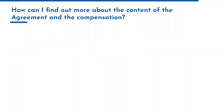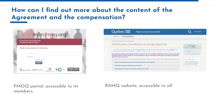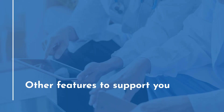Where can clients get more information on the agreement and compensation incentives? Most resources are available in French. They can be found on the FMOQ portal, accessible to its members — all general practitioners in Quebec. The RAMQ website also addresses billing questions directly. Additionally, Mile wants to be your partner in meeting the measures included in the agreement between the FMOQ and the Ministry, supporting you in achieving targets and improving operations.